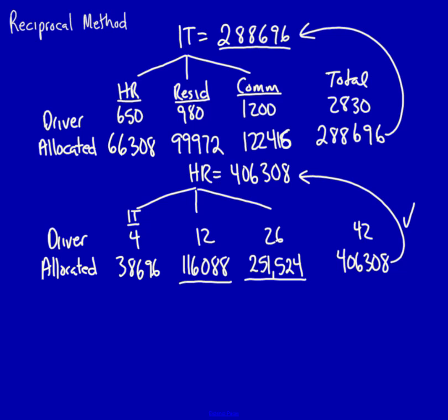What do we have to do now? I have to add up the residential and the commercial. What do I have to do with human resources and information technology? Nothing. I have to ignore them totally. Instead, I'm going to add the residential, these two numbers, and that's going to get me my total allocated.